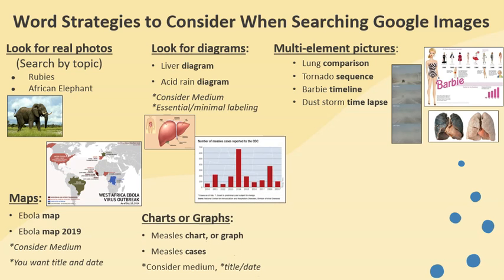Charts or graphs are a great way to communicate data. You can look under measles chart or measles graph, measles cases, or do the same with Ebola by typing in Ebola outbreak or Ebola cases. Consider medium images when you're looking for charts or diagrams, and use a visual that has a title and a date. This is very important when you're communicating statistics and data.